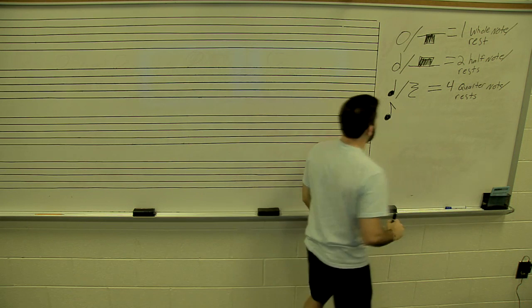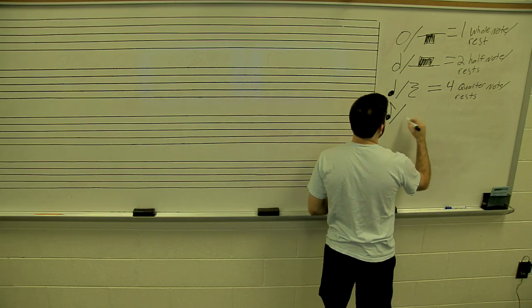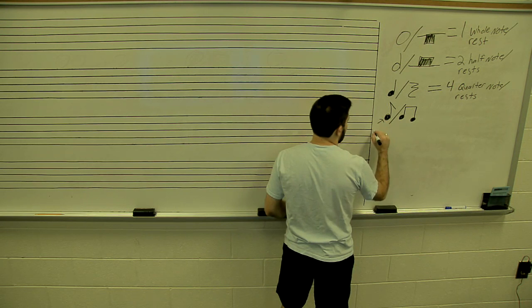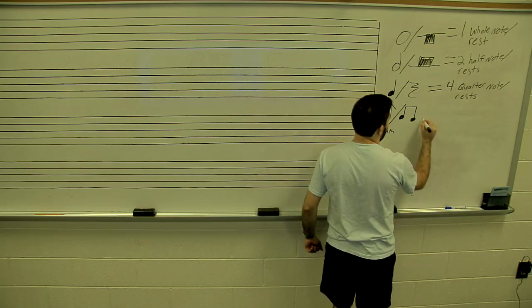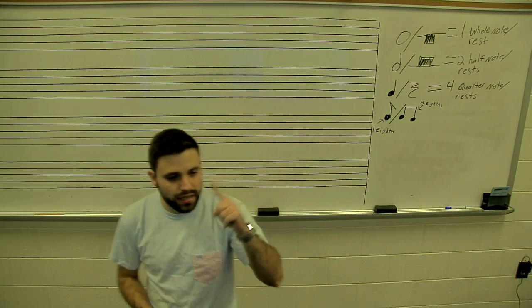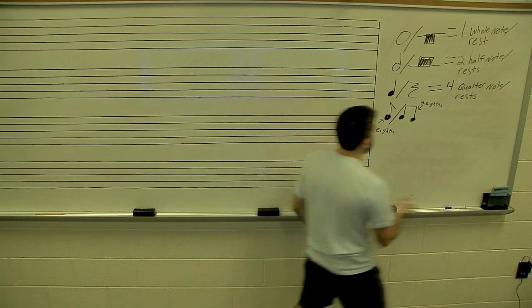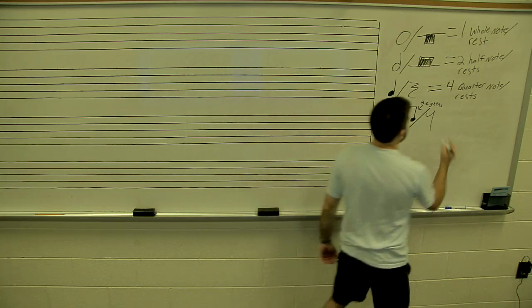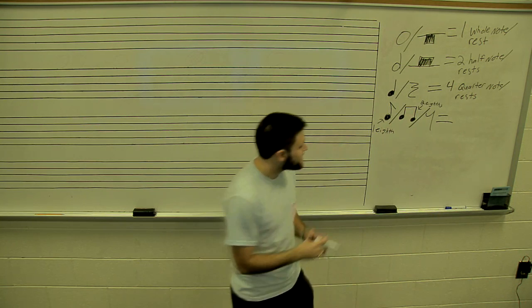We also have eighth notes. By themselves they look like a note with a little flag, but they can also be beamed together in pairs. One eighth note is just a single flag; two eighths together are usually beamed. Eighth rests look almost like a seven. In one whole note, there are eight eighth notes.